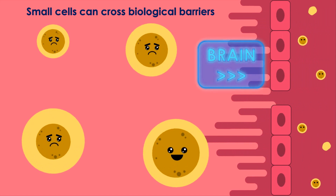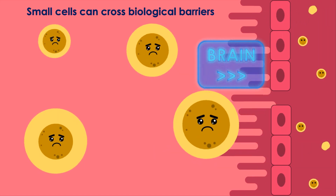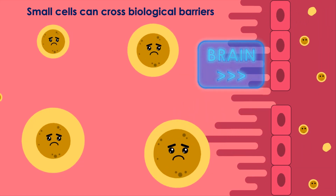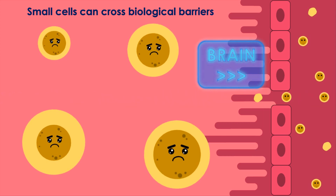Cells small enough to cross biological barriers were more common in late infection, and may be beneficial as they can more easily spread through the body and proliferate.